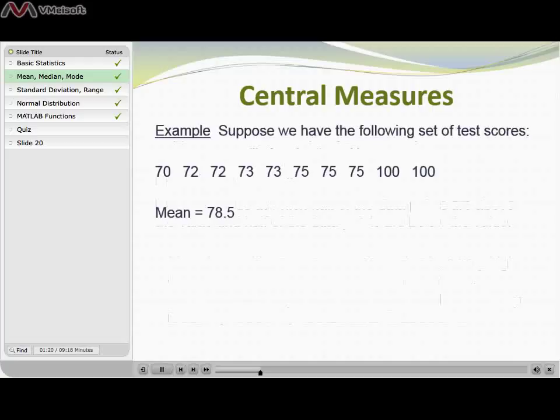If I want to get the median, I have to find the value at which half of the data points or half of the test scores are above that score and the other half of the test scores fall below that score.